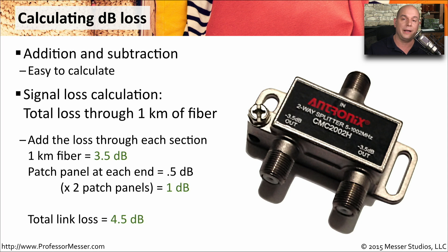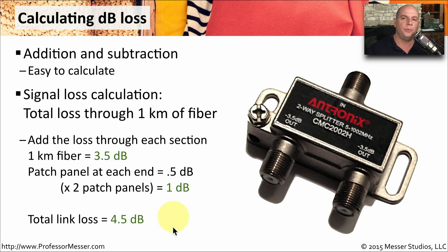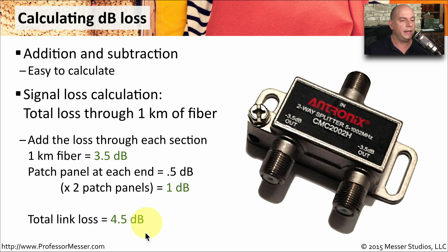Every time we go through a connection, we're going to lose some signal. There will certainly be patch panels at each end of the fiber connections. Each patch panel contributes 0.5 dB of loss, so both patch panels together add up to 1 dB of total loss. Adding everything up — one patch panel, the entire 1 kilometer of fiber, and the patch panel on the other side — we can expect to lose 4.5 dB of signal in total.